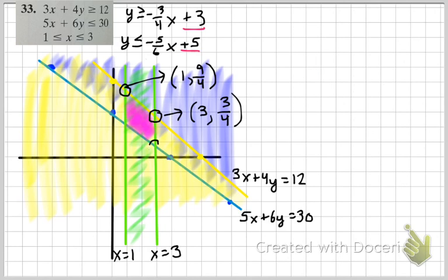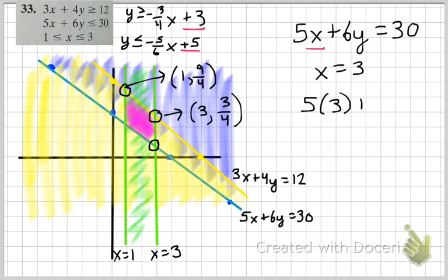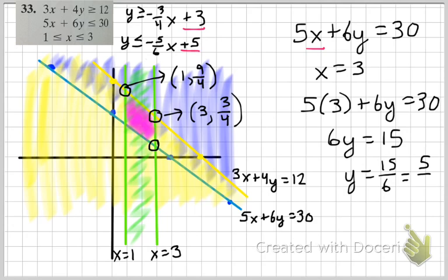Now let's work with this coordinate point. So the two equations I'm working with here are 5x plus 6y equals 30. And x equals 3. So I'm going to plug in my x value. 5 halves.